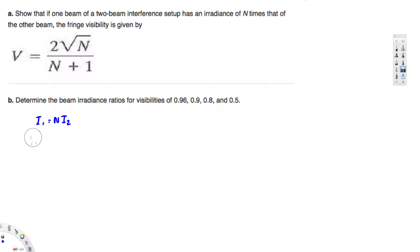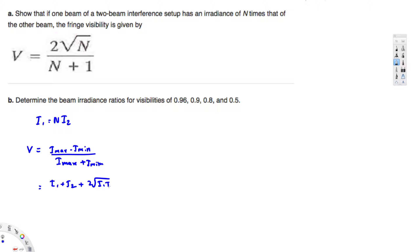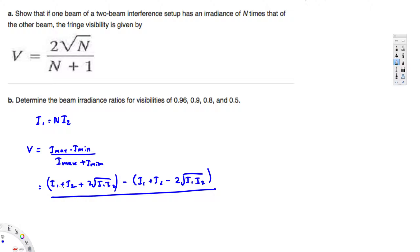To show this equation, we are going to use the visibility equation. Visibility is given by V = (I_max − I_min) / (I_max + I_min). To calculate I_max, we use: I_max = I1 + I2 + 2√(I1·I2). For I_min, we subtract the 2√(I1·I2) term: I_min = I1 + I2 − 2√(I1·I2). Substituting into the visibility formula, the numerator becomes I1 + I2 − 2√(I1·I2) and the denominator becomes I1 + I2 + 2√(I1·I2) plus I1 + I2 − 2√(I1·I2).